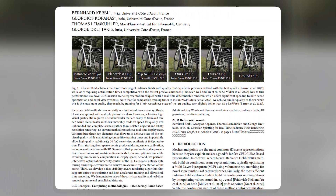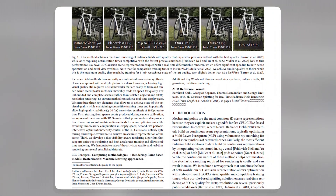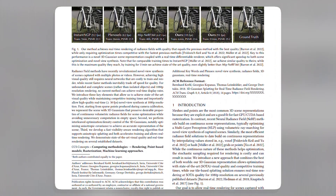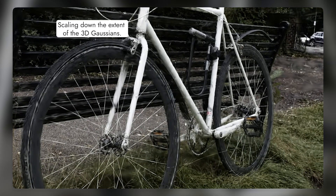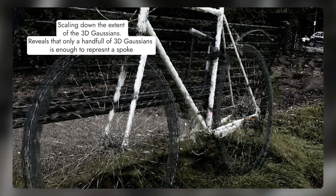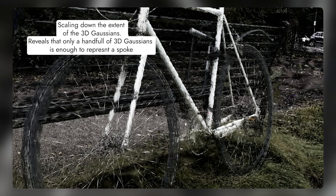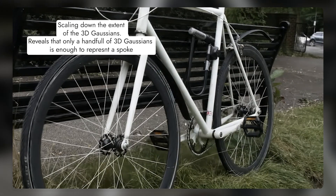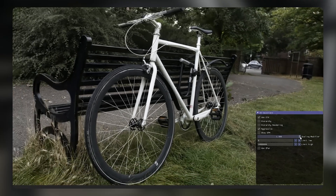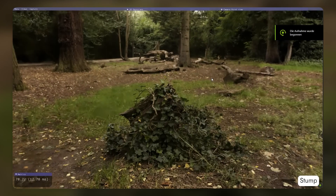The authors of 3D Gaussian Splatting proposed to use 3D Gaussians as a way to encode both the geometry and appearance of the scene. Each 3D Gaussian represents a small patch of the scene surface with its position, normal, color, and opacity. By using 3D Gaussians, they can capture both smooth surfaces and sharp edges with high accuracy.